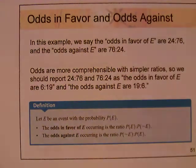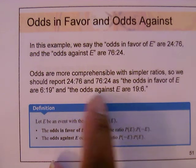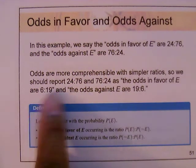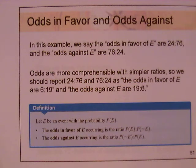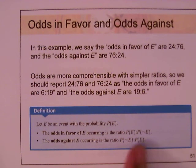This is like taking the reciprocal of a fraction. Odds are more comprehensible with simpler ratios, so we reduce 24 to 76 and 76 to 24 by dividing by 4: odds in favor of E become 6 to 19, and odds against E become 19 to 6. The odds in favor of E is the ratio of P(E) to P(not E); the odds against E is the ratio of P(not E) to P(E).